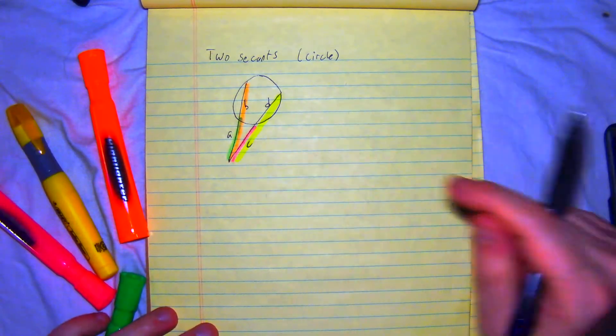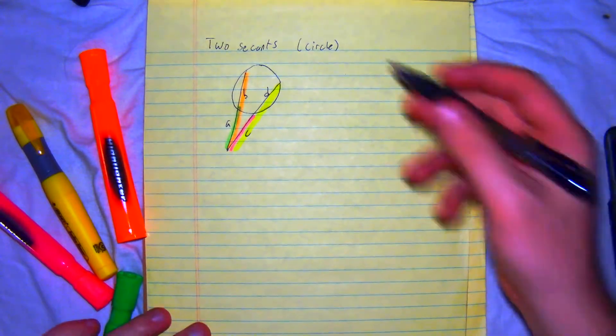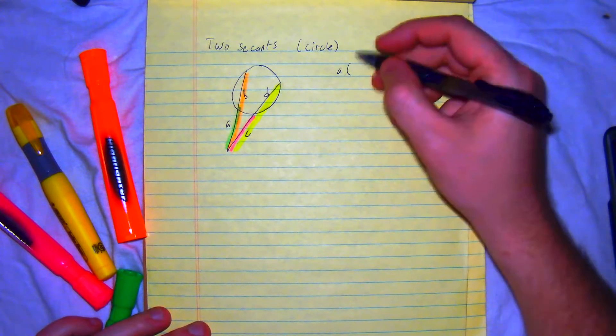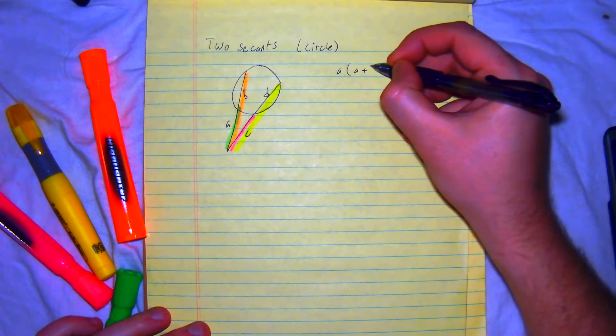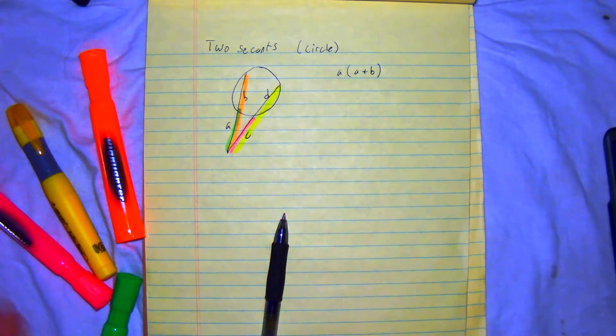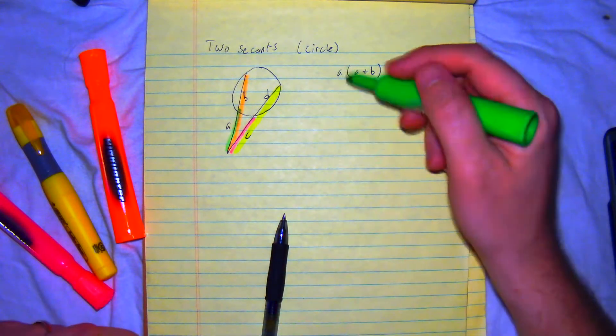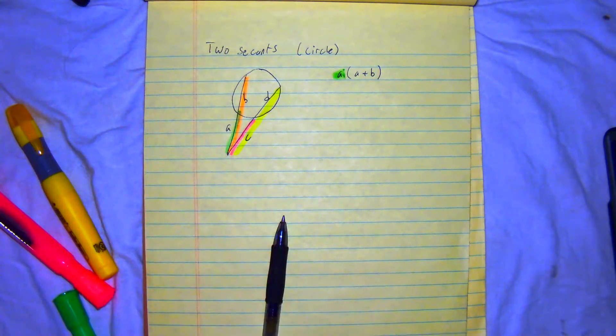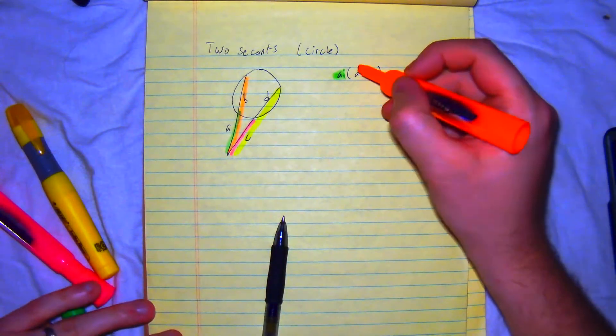Again, outside by the full length. So, what we have here is it's going to be A times A plus B. So, how does that look from this color? Well, A is the outside length. And B is that orange, showing the full secant.